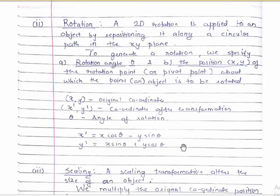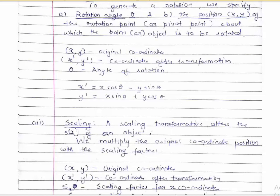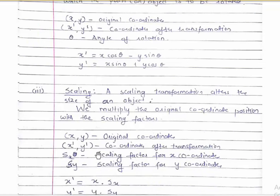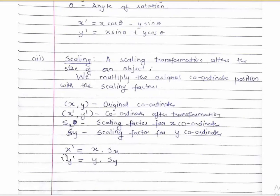Third is scaling. As the name suggests, a scaling transformation alters the size of an object. Suppose we are given a small line and we scale it by multiplying by two — basically we are increasing the length to twice its original size. We multiply the original coordinate positions by the scaling factor. x comma y are original coordinates, x-dash comma y-dash are coordinates after transformation. sx is the scaling factor for x, sy is the scaling factor for y. So x-dash equals x·sx, and y-dash equals y·sy.